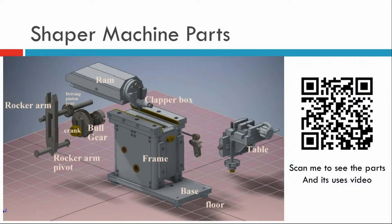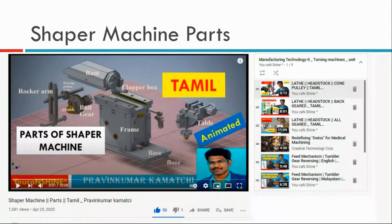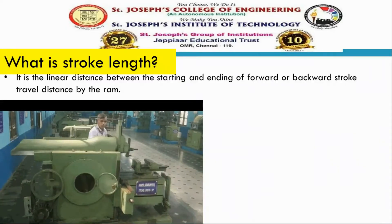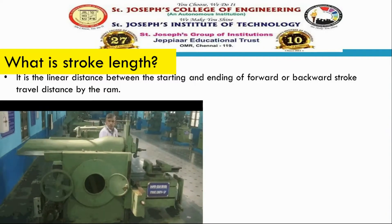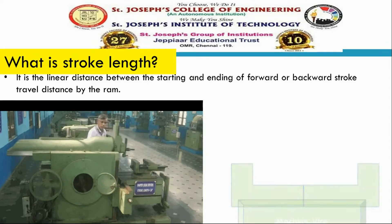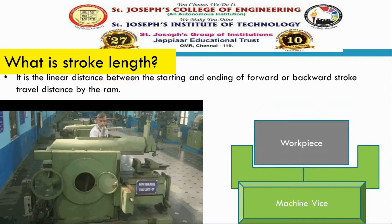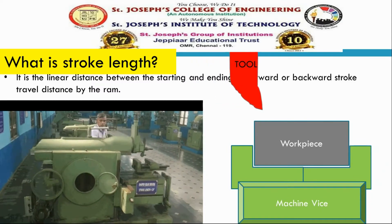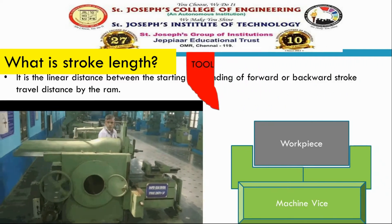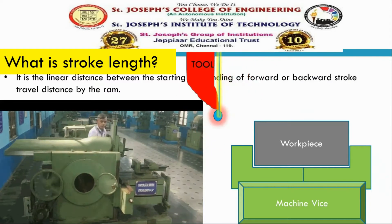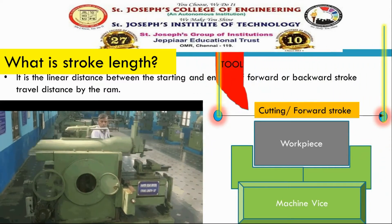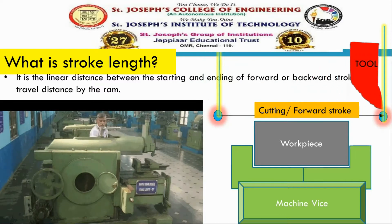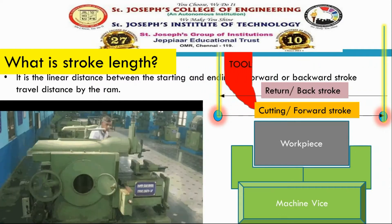If you have any doubt, just refer to the previous video — that is 'Parts of Shaping Machine' on our channel. Let's see what is meant by stroke length. You can see the reciprocation of the ram, and the workpiece is going to be clamped using a machine vise. This is our tool. The tool moves from the left extreme point to the right extreme point. That left-to-right movement is known as the cutting or forward stroke.